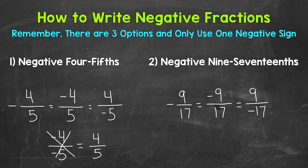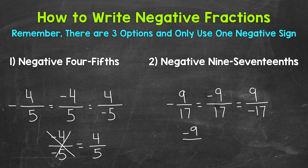Three different options there — only use one negative sign. The one thing we can't do here is use a negative with both the numerator and denominator. So negative nine over negative seventeen would actually give us positive nine-seventeenths. Because fractions represent division, and a negative divided by a negative equals a positive. So do not put a negative with both the numerator and denominator.